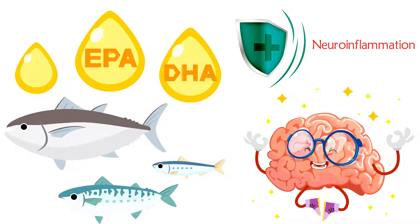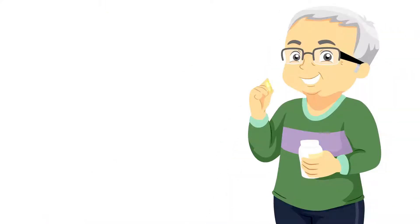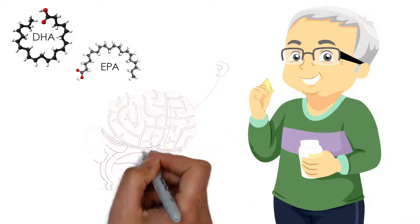A protective effect against neuroinflammation, in addition to providing other benefits. Taking omega-3 fish oil capsules of high quality with higher amounts of EPA and DHA is an easy way to help your brain.